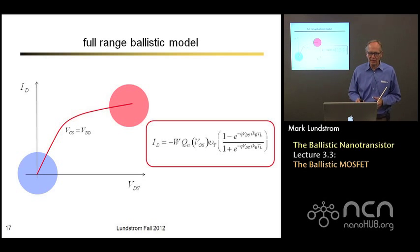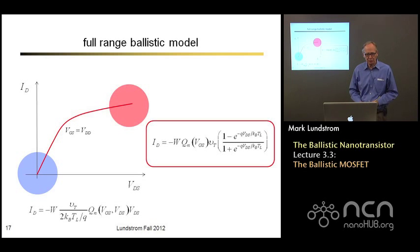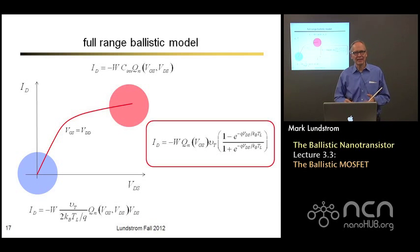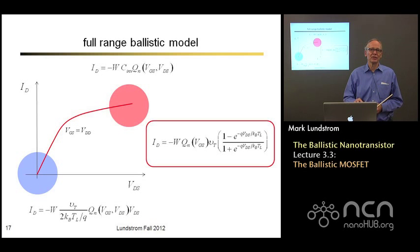Once we understand the Landauer formalism, it's relatively easy to derive the full-range IV characteristics. We now have a complete IV characteristic of a ballistic MOSFET that reduces to simpler expressions under low and high drain-to-source bias. There's still more to discuss — what's different about a ballistic MOSFET compared to the traditional MOSFET. The next three lectures will dive more deeply into this mathematics and develop more physical insight into what's going on. We'll begin that discussion in lecture four next time.